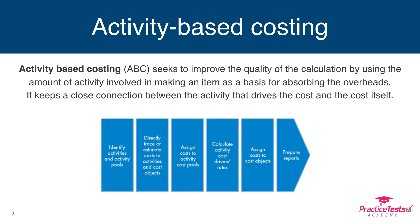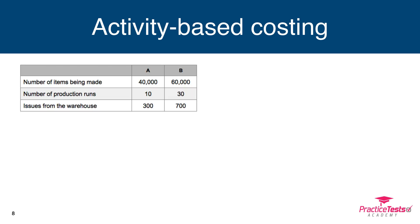Activity-based costing, or ABC, seeks to improve the quality of the calculation by using the amount of activity involved in making the item as the basis for absorbing overheads. It therefore keeps a close connection between the activity that drives the cost and the cost itself. Suppose in our factory we make two products: product A, which we've already met, and product B. Here's some information about the activity that goes into making each product.